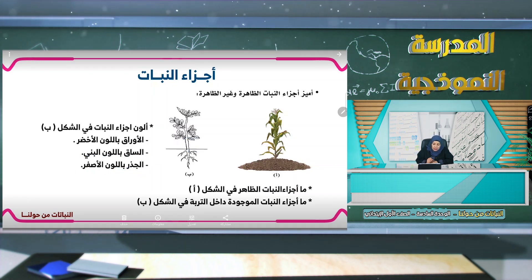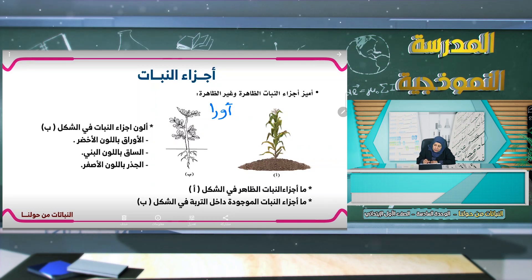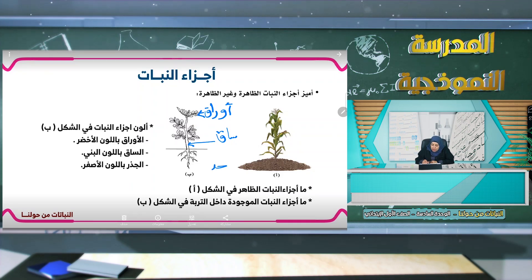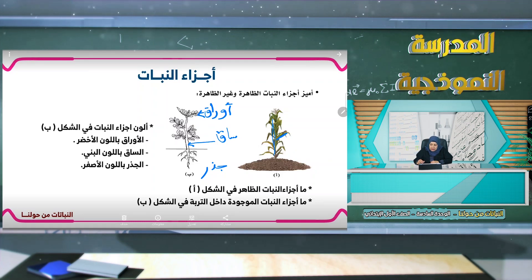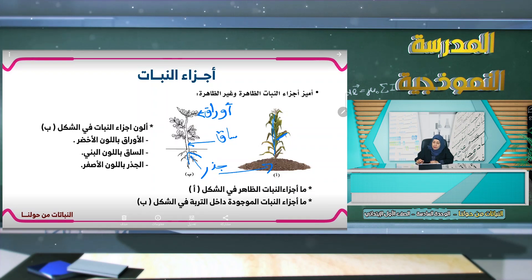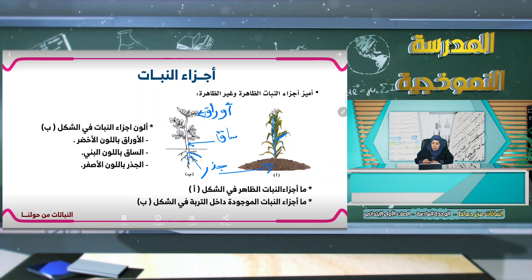في التقويم: ألوّن أجزاء النبات في الشكل. هنا سوف نكتب اسم الجزء بجانبه. هناك ساق بلون بني، وهناك جذر بلون أصفر. أكتب: أوراق، ساق، جذر. الأجزاء الظاهرة هي الساق والأوراق، أما الأجزاء غير الظاهرة فهي الجذور لأنها تحت التربة.